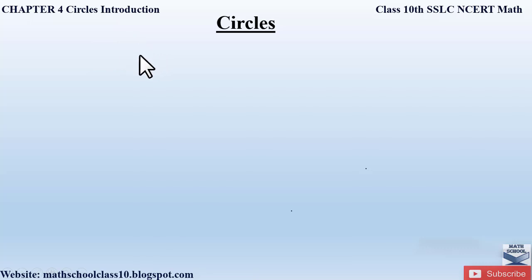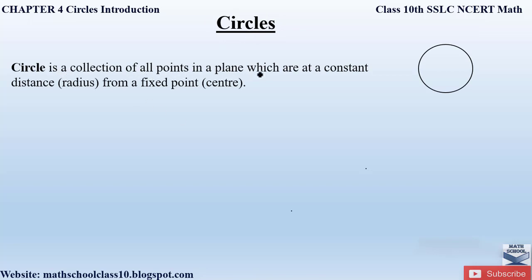We will learn some important statements and theorems. First, let us see what a circle is. A circle is a collection of all points in a plane which are at a constant distance from a fixed point called the center. A circle is made up of infinite number of points, all equidistant from center O. The distance between the circle and this center is called the radius, also denoted as R.